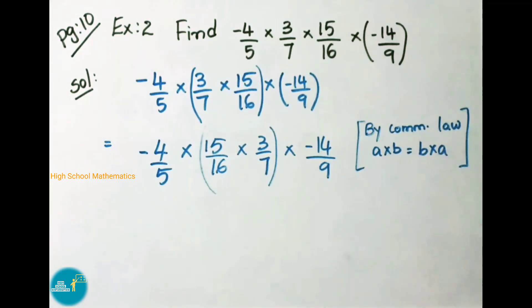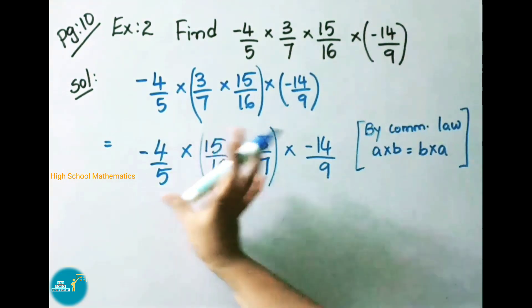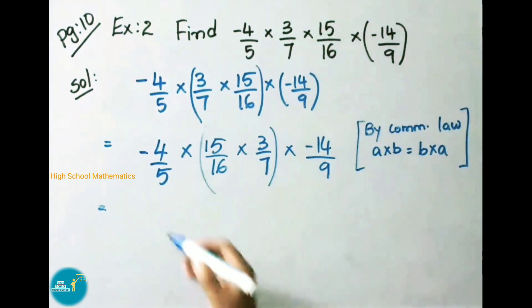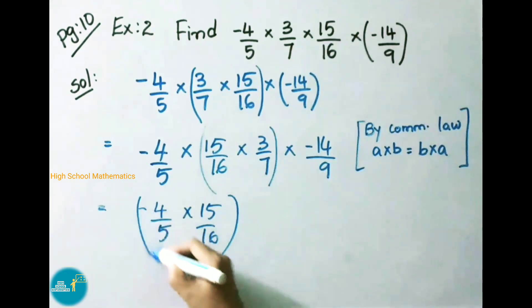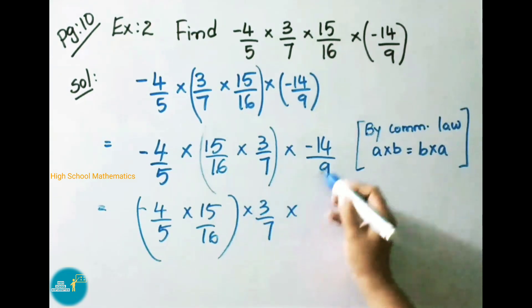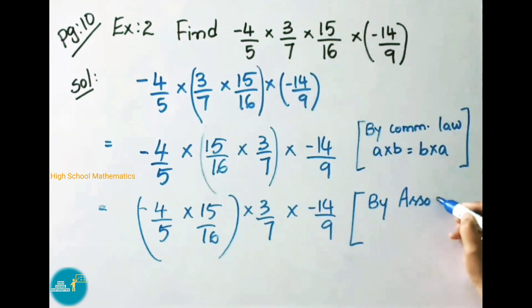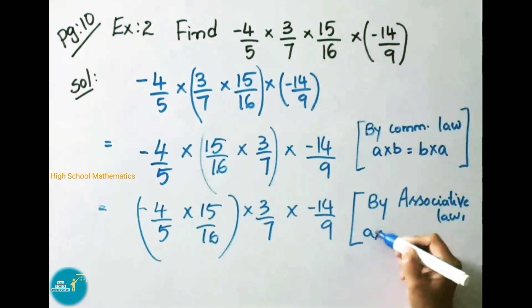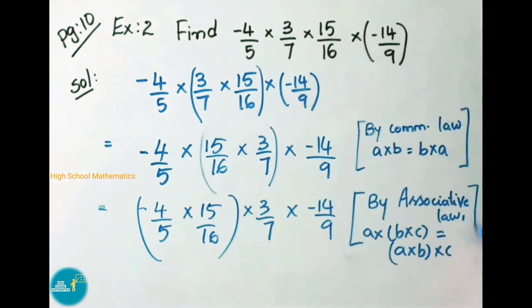Next, we are going to apply associative property. A into B into C can be written as A into (B into C). So applying associative property: minus 4 by 5 into 15 by 16, into 3 by 7 into minus 14 by 9. These laws — commutative law and associative law — we have already learnt in 7th class. Now let us solve this.